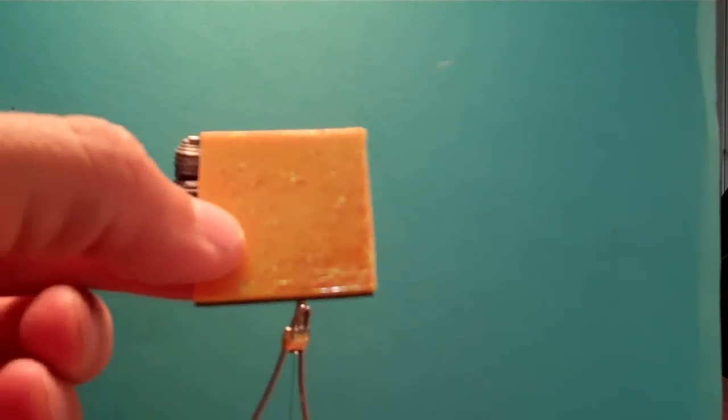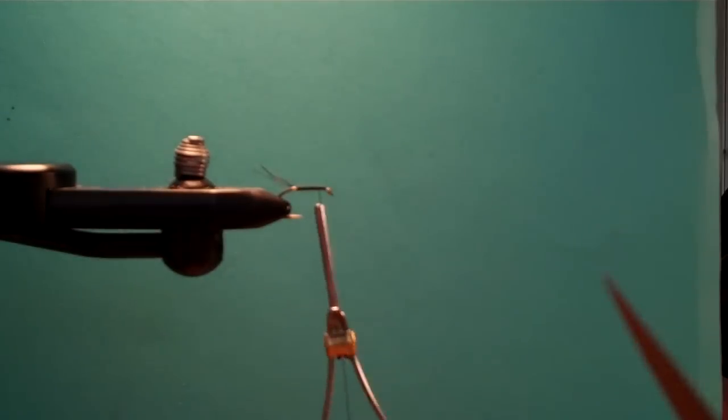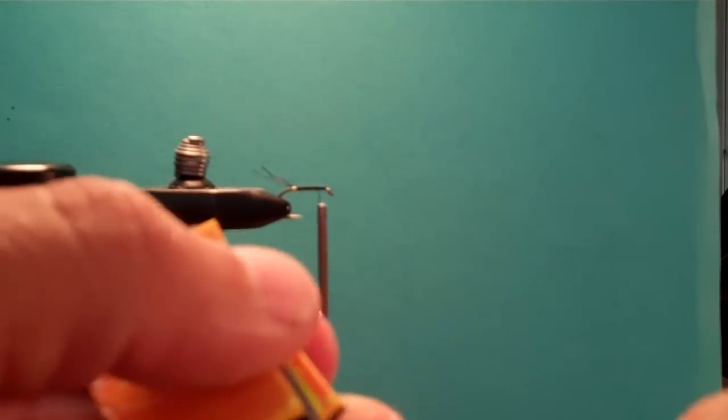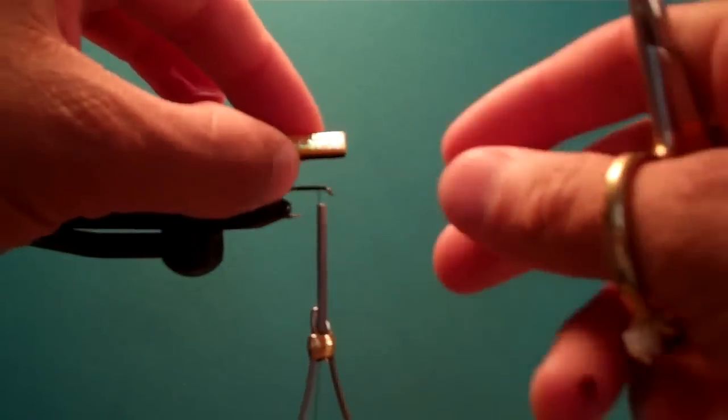Now we're going to take my foam again and cut a thin strip. Measure that for the hook size. You know what, that's too thick for me. Let's cut another piece. Alright, that's better. Now we're going to do the hook size like that.